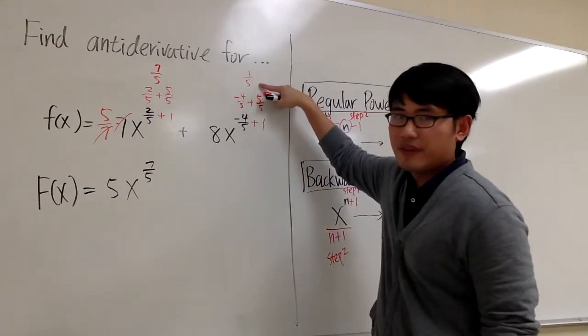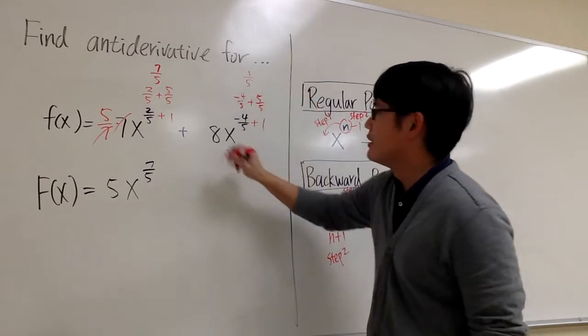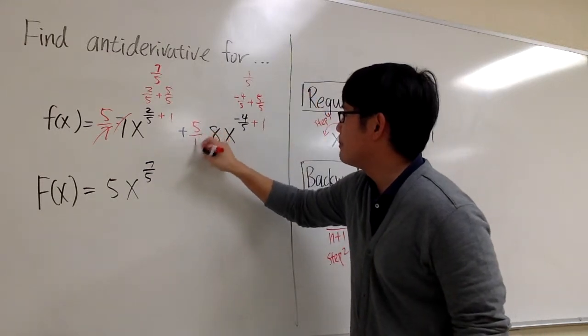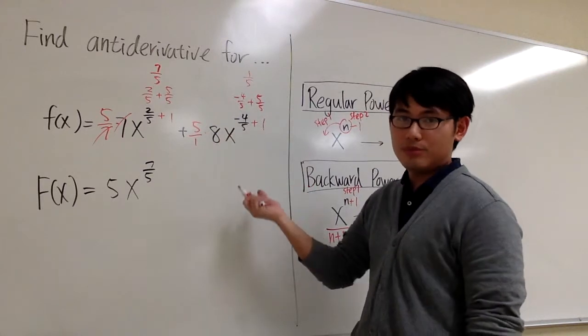Dividing by 1/5 is the same as multiplying by 5 over 1. So let me write this down. Multiply by 5 over 1. Multiply by 5.